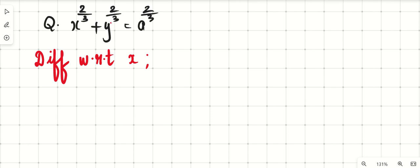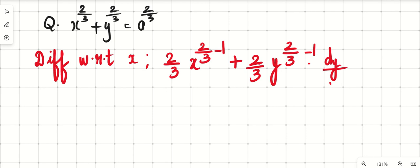This is x raised to n. What is x raised to n? nx raised to n minus 1. So 2 by 3 x raised to 2 by 3 minus 1 plus 2 by 3 y raised to 2 by 3 minus 1 into dy by dx equal to 0.